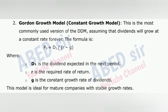This model is useful for companies that pay stable and predictable dividends. 2. Gordon Growth Model (constant growth model): this is the most commonly used version of the DDM, assuming dividends will grow at a constant rate forever. The formula is P0 = D1 / (R - G), where D1 is the dividend expected in the next period, R is the required rate of return, and G is the constant growth rate of dividends.